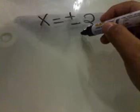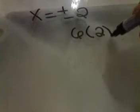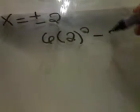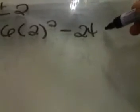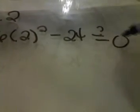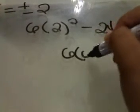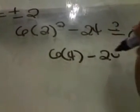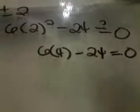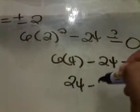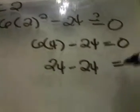This is already our answer. In order for us to know that this answer is correct, we will do a checking. x is equivalent to positive or negative 2. Let's try positive 2 first: 6 times positive 2 raised to the power of 2 minus 24 is equal to 0. That gives us 6 times 4 minus 24 equals 0, which is 24 minus 24 equals 0, so 0 equals 0. Positive 2 is correct.